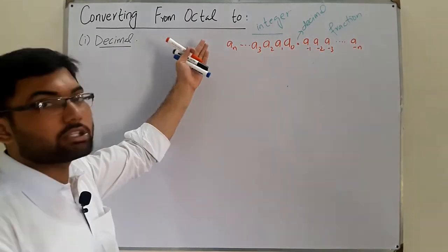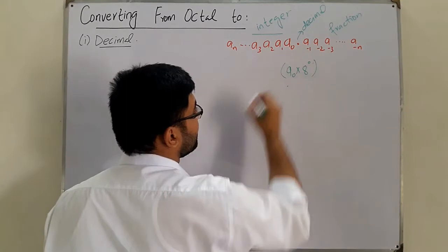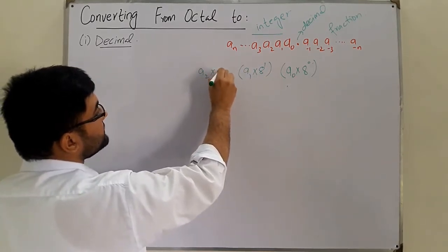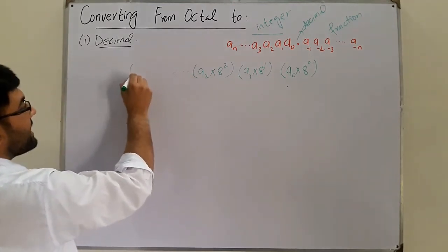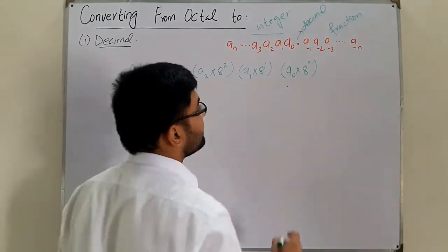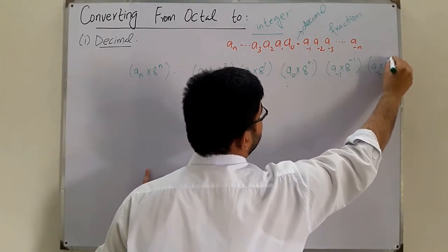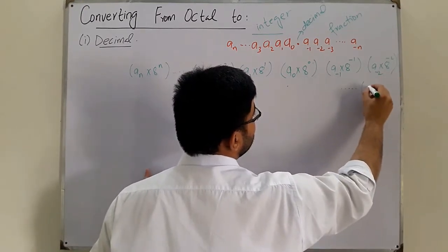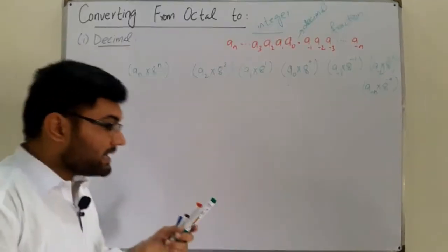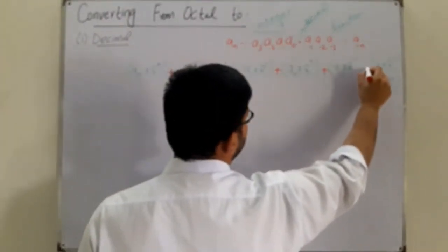To convert, you multiply each and every term with its weight. a₀ has a weight of 8 to the power 0, so a₀ is multiplied by 8⁰. Then a₁ is multiplied by 8¹, a₂ by 8², continuing till aₙ by 8ⁿ. After the decimal point, the weights are negative: a₋₁ multiplied by 8⁻¹, a₋₂ by 8⁻², and so on up to a₋ₙ by 8⁻ⁿ. You multiply all of these by their weights, then add them up — the resultant sum is the decimal equivalent.